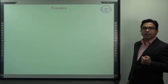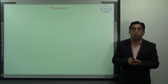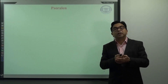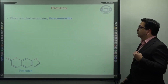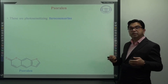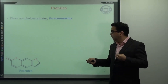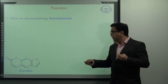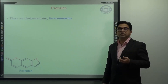We go to the next example, that is psoralen. Psoralen is one of the most important medicinally important examples of coumarin. These are also known as photosensitizing coumarins, or photosensitizing furanocoumarins. If you look at the structure of psoralen, the coumarin ring is fused with a furan ring, because of which they are also known as furanocoumarins.